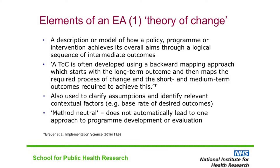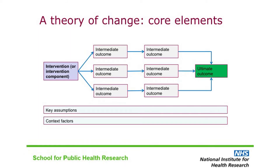An important feature of a theory of change is that it's method-neutral — it doesn't automatically lead to one preferred approach to evaluation. Theories of change can be very complicated, but they're built out of core elements. If the intervention is very complex, it can be helpful to break it down into its component parts and work out how each of them is expected to operate before putting all the separate theories back together into an overall theory of change.